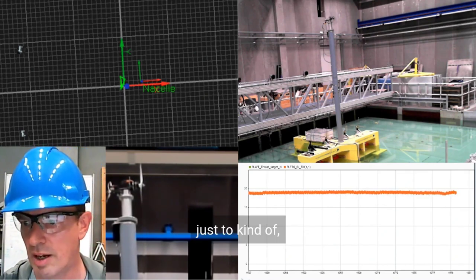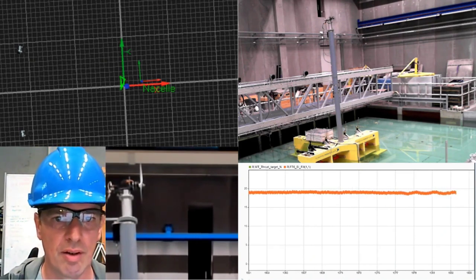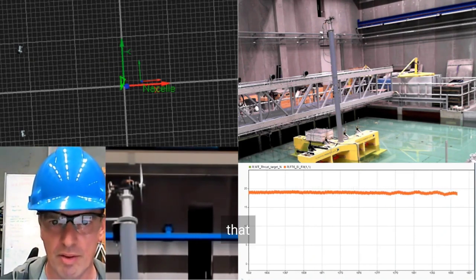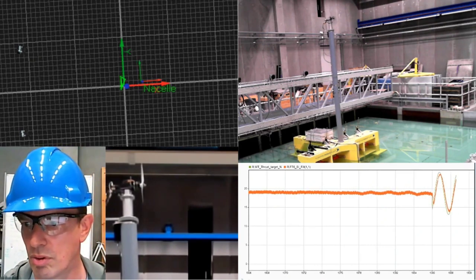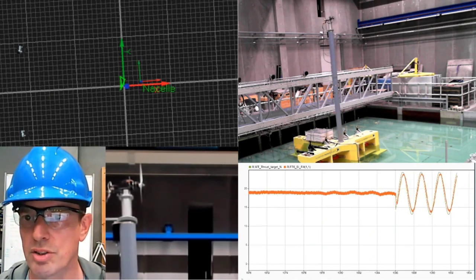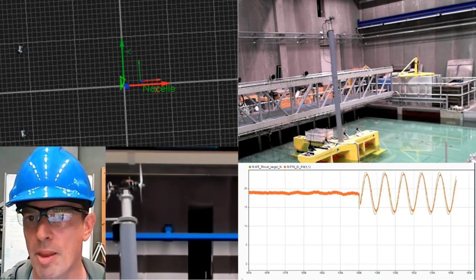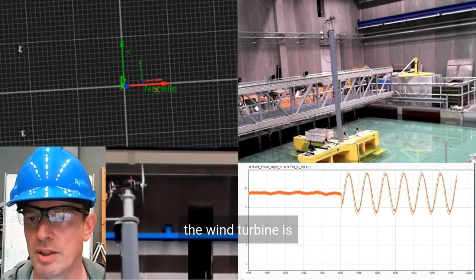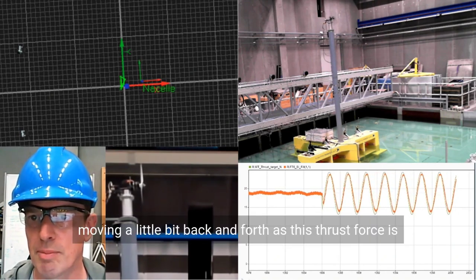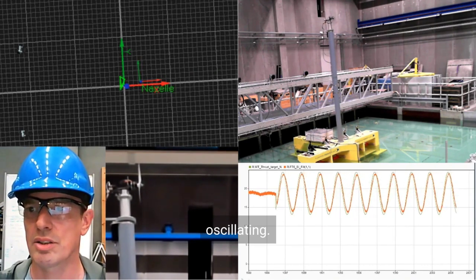Just to demonstrate that my fan, the wind turbine, is able to recreate variable thrust. So you can see now that the wind turbine is moving a little bit back and forth as this thrust force is oscillating.